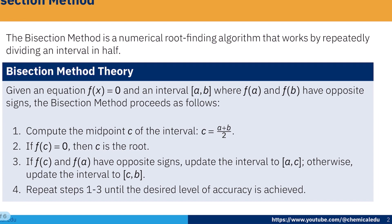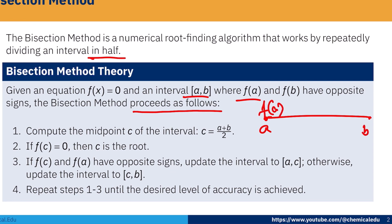What is the bisection method? The bisection method is a numerical root-finding algorithm that works by repeatedly dividing an interval in half. Given an equation f(x) = 0 and an interval [a, b], where f(a) and f(b) have opposite signs, the bisection method will work.